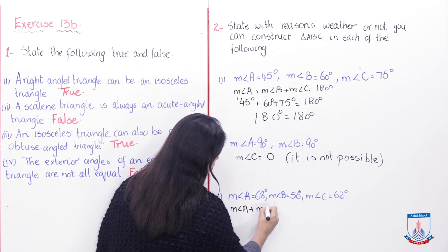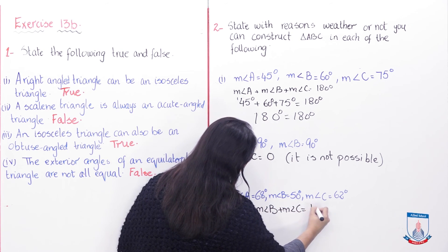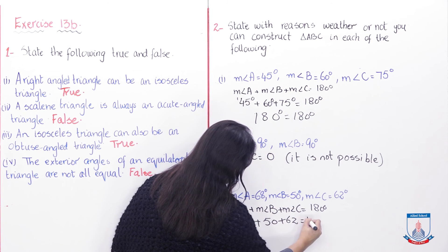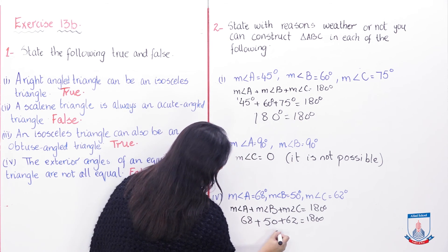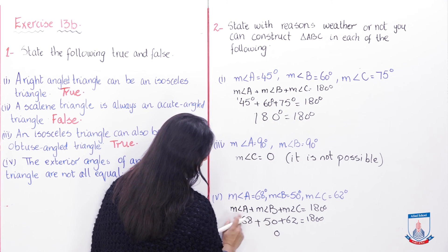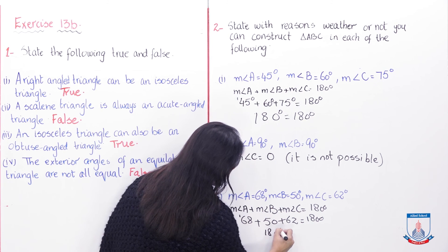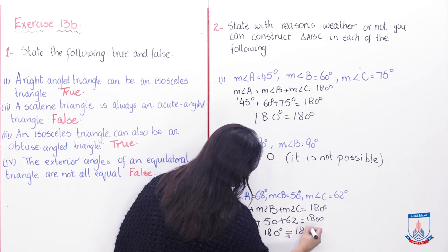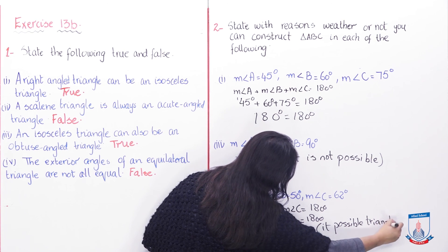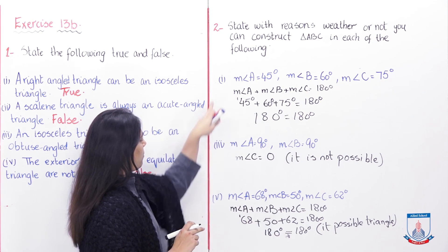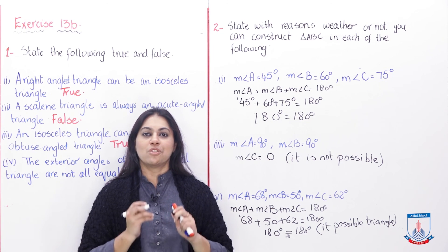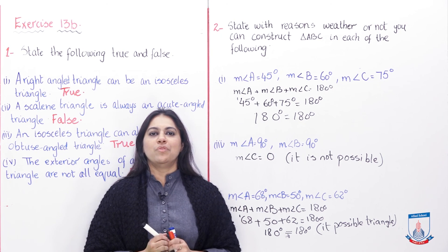Now Question 2 part 5: measure angle A = 68, measure angle B = 50, measure angle C = 62. Let's add them: 68 + 50 + 62. Adding the units: 8+0+2 = 10, carry 1; 6+5+6+1 = 18, carry 1; that gives 180 degrees exactly. So this also makes 180 degrees and it is possible to construct this triangle. As homework, draw triangles for parts 1 and 5 using a protractor.